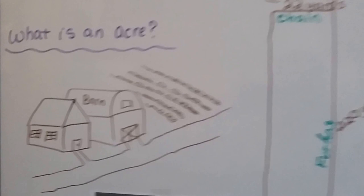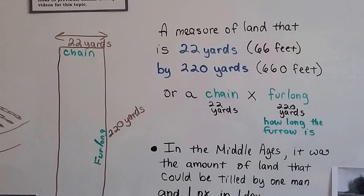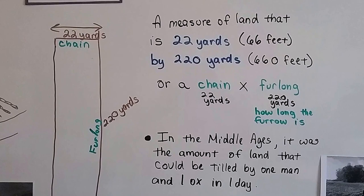It's a measure of land that is 22 yards, that's 66 feet, by 220 yards, that's 660 feet. Because remember, there's three feet in a yard.